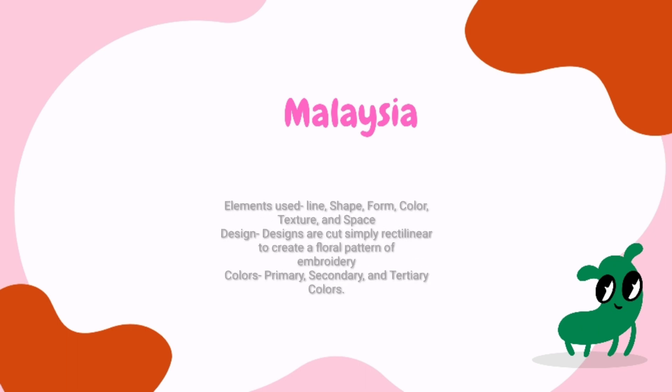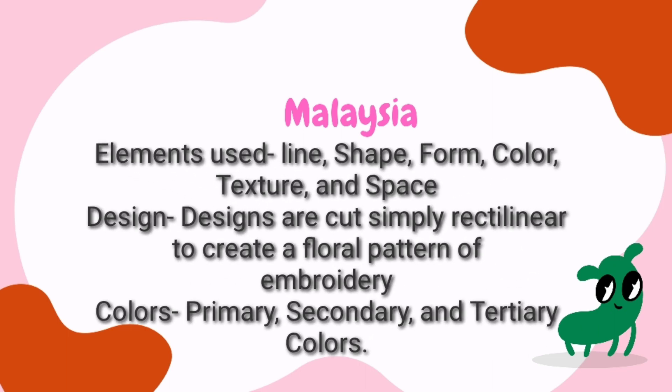Elements and principles used in Malaysia. Elements used: Line, Shape, Form, Color, Texture, and Space. Design: Designs are cut simply rectilinear to create a floral pattern of embroidery. Colors: Primary, Secondary, and Tertiary Colors.